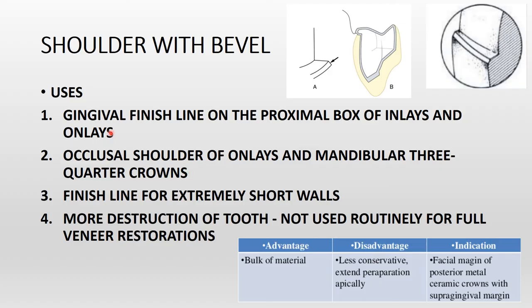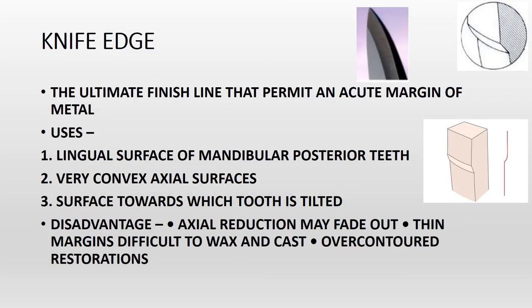Shoulder with bevel: indicated for the gingival finish line on the proximal box of inlays and onlays, occlusal shoulders of onlays, extremely short walls, and where there is more destruction of the tooth. A bevel adds an angulation to the finish line. Advantages: bulk of material. Disadvantage: less conservative. Indication: facial margin of posterior metal-ceramic crown with supra-gingival margin; mostly used in inlays and onlays.